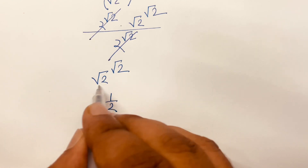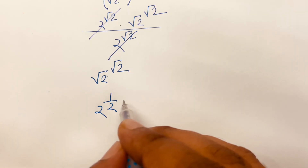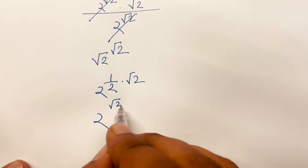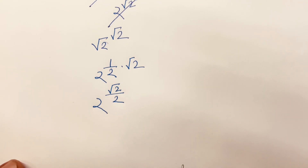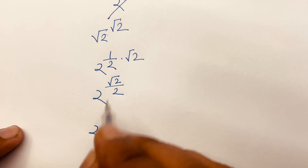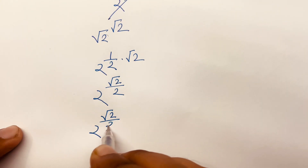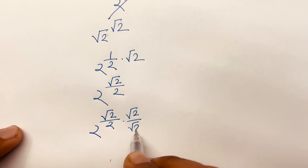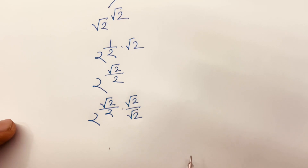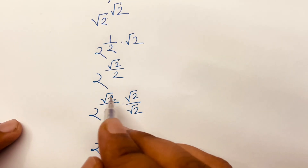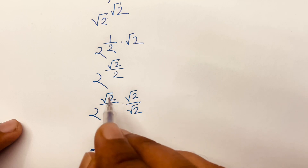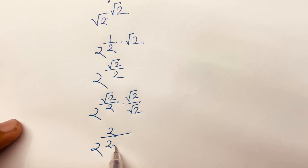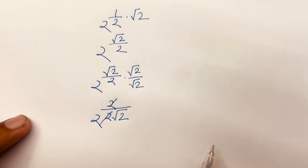Because square root 2 equals 2 to the power one half. Then multiplying square root 2 over square root 2, these cancel and we get 2 to the power square root 2. After further cancellation, here is 2 to the power 1 over square root 2.